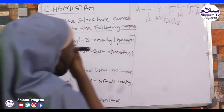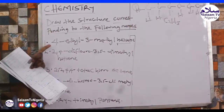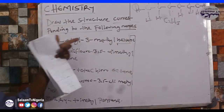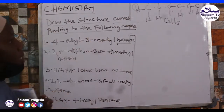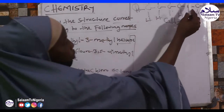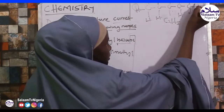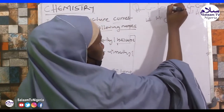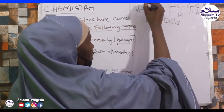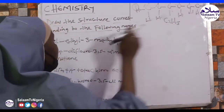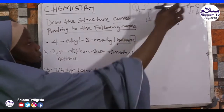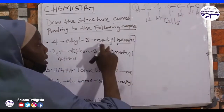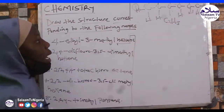So Number 1, 4-ethyl-3-methylhexane: we draw the hexane chain 1, 2, 3, 4, 5, 6. At position 4 we place the ethyl group, and at position 3 we place the methyl group. That completes example 1.